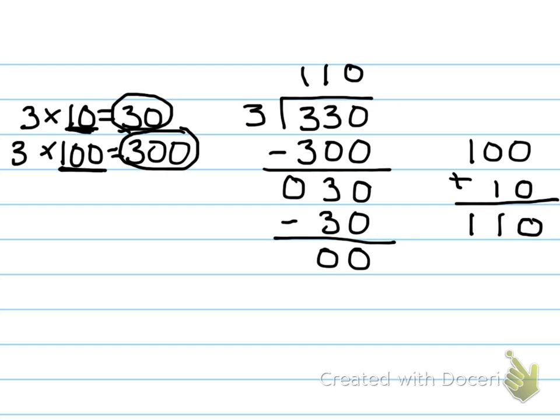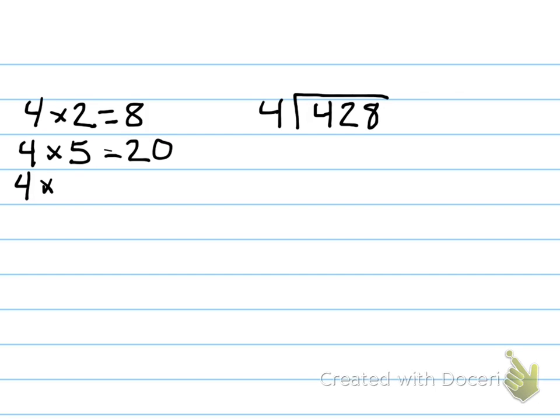Let's try one more before you go. Let's do 428 divided by 4. Well, I see a 400. I see a 20. I see an 8. So I'm going to write those multiplication facts on the side because those are the ones I think I will use to subtract. So let's start with 4 times 2. That would give me 8. How about 4 times 5? That would give me 20. And let's do 4 times 100, which would give me 400.